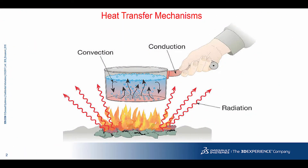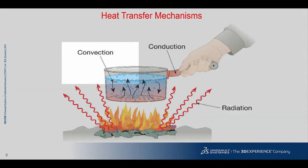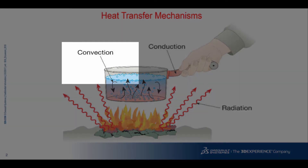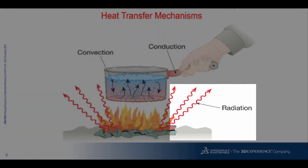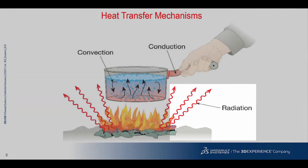There are three mechanisms of heat transfer: conduction, convection, and radiation. The choice of simulation tool to use depends on which of these three mechanisms are taking place. Conduction is the transfer of energy between solids that are in physical contact. Convection is the transfer of energy between a solid and its surrounding fluid. Radiation is the transfer of energy from a solid to ambient or between solids by electromagnetic waves.